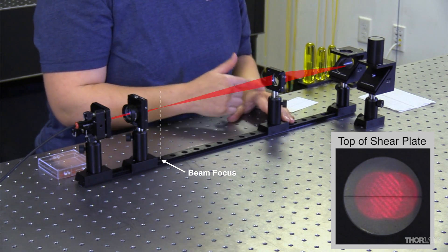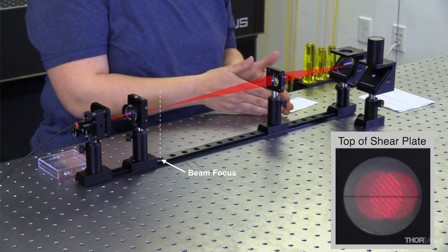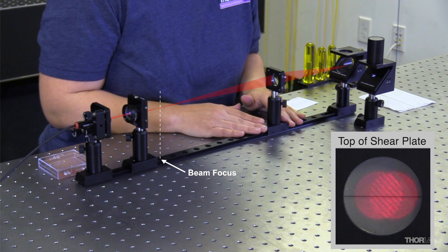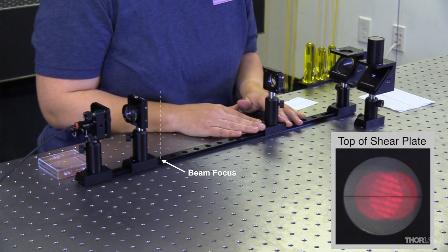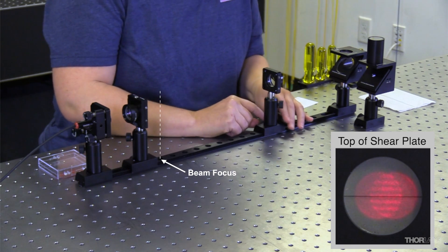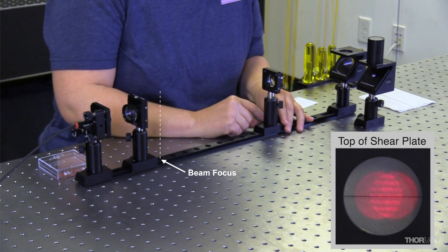And so this tells me, gives me some feedback on whether or not I'm too far away from the focus or too close to the focus. So I know I'm too far away here. I'm going to back up a little bit and I'm going to line this up so that it's directly lined up with the line on top of the shearing interferometer.